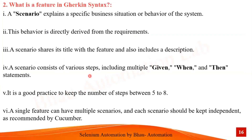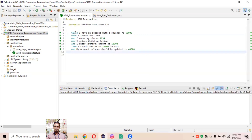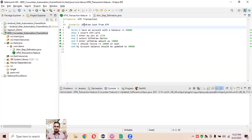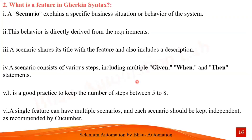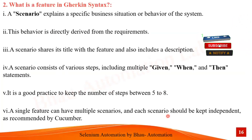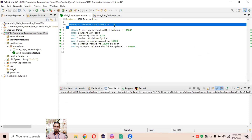It's good practice to keep the number of steps between five to eight per scenario. Here for the 'withdrawal cash from ATM' scenario we have written Given, When, and then steps 1 through 7 — so one scenario should ideally have only five to eight steps, not more. Keeping more steps loses readability of that particular scenario. A single feature can have multiple scenarios, and each scenario should be kept independent as recommended by Cucumber.